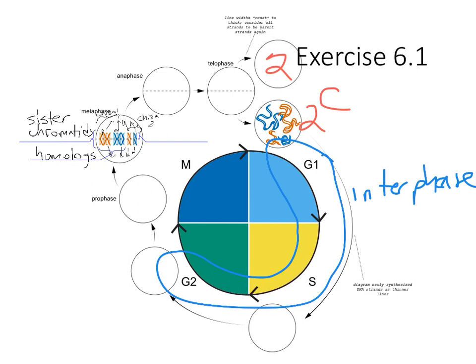At metaphase, the DNA content of the cell is 4 — four copies of every chromosome. This is the point of mitosis: copy all the DNA, then divide the cells so the number of chromosomes in every cell remains the same from generation to generation. At what point in the cell cycle does DNA content change from 2 to 4? During S phase, when replication occurs. By the end of synthesis there are four double helices of every chromosome, and after mitosis it goes back down to 2.